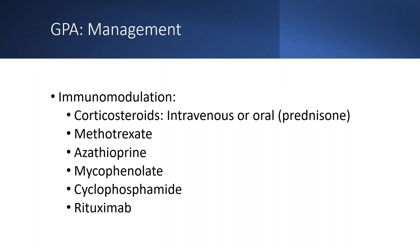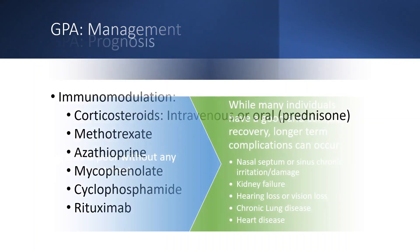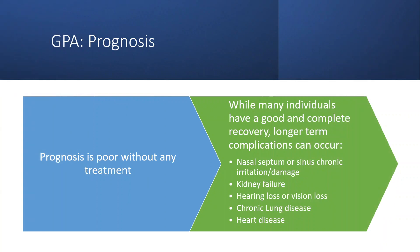There are a number of medications which may be used — we have videos on most of these specifically. Which medication is used really depends on the severity of the disease. For someone with more limited GPA, methotrexate or azathioprine might be used at the very beginning. For someone with more serious disease involvement, cyclophosphamide or rituximab may be options. Years ago, before many of these treatment options existed, the prognosis for GPA was actually quite poor. Today, the vast majority of individuals have a very good and complete recovery, although depending on a number of factors, longer-term complications can occur.